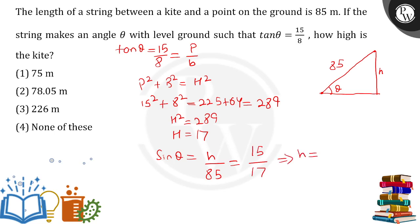From here, the perpendicular height h = 15 × 85 ÷ 17. Canceling out, 17 into 85 is 5 times, so h = 75 meters. 75 meters is our answer, which matches option number 1.